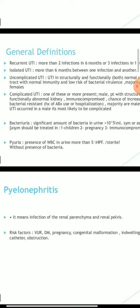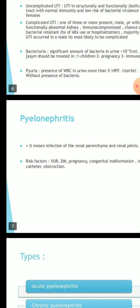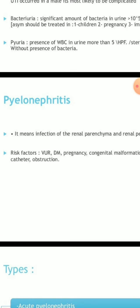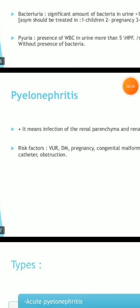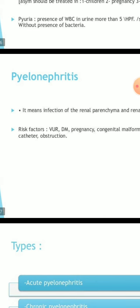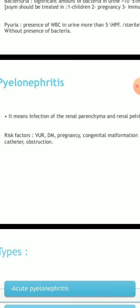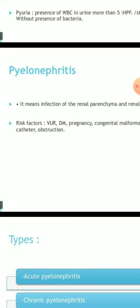Next is pyelonephritis — infection of the renal parenchyma and renal pelvis. Risk factors include urinary obstruction, pregnancy, congenital malformation, and catheter obstruction.